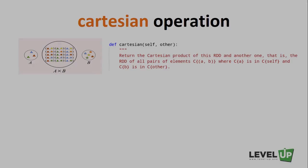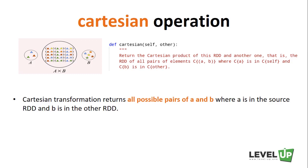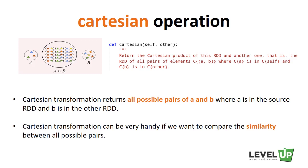The last set operation is Cartesian. The Cartesian transformation returns all possible pairs of A and B, where A is in the source RDD and B is in the other RDD. Cartesian product is handy for comparing similarity between all possible pairs — for example, computing every user's rating for each movie, or analyzing product similarity by taking the Cartesian product of an RDD with itself.